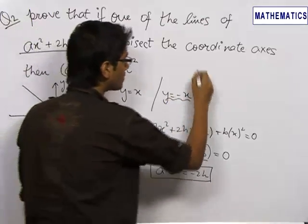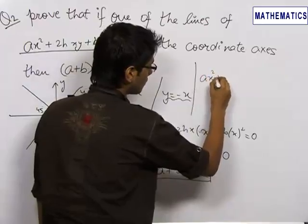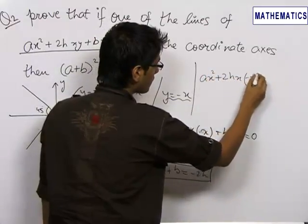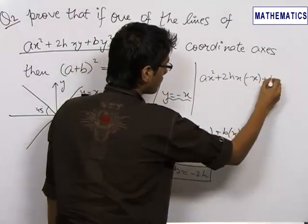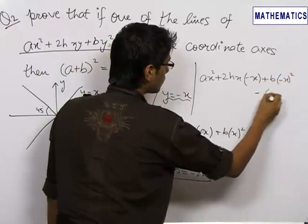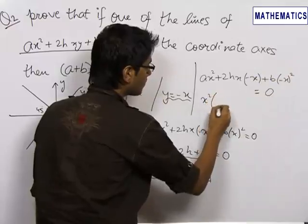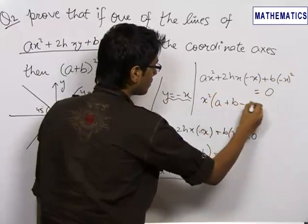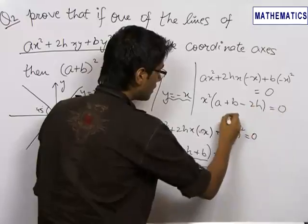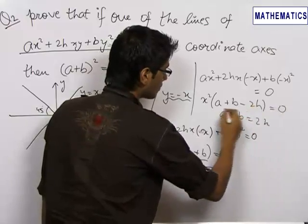Now, putting y equals minus x in the given equation, we get A x squared plus 2h x times minus x plus b times minus x squared equals 0, which gives us x squared times (A plus B minus 2h) equals 0, which leads us to A plus B equals 2h.